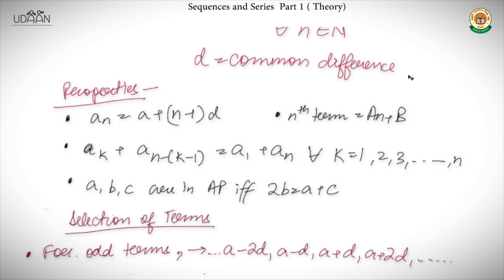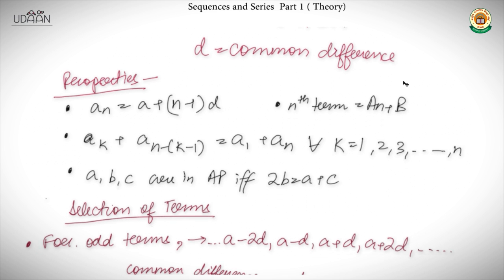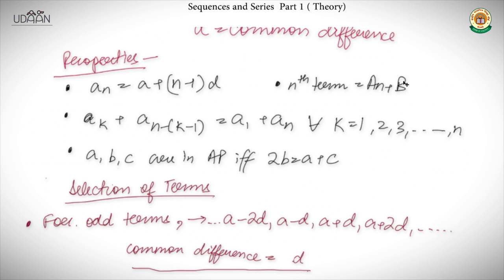This formula is very intuitive — to get the nth term, you just add d repeatedly. Since the first term is already a, we add the common difference (n−1) times. So the nth term is easy to arrive at just by looking at it. By this, we can go to any term of an AP just by defining the common difference, the first term, and the number of terms.